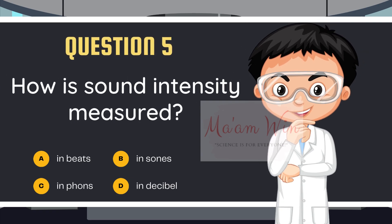Last question for part 2. How is sound intensity measured? Letter A, in beats. Letter B, in zones. Letter C, in bones. Letter D, in decibel.